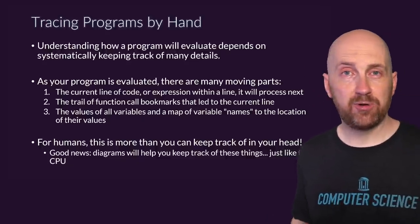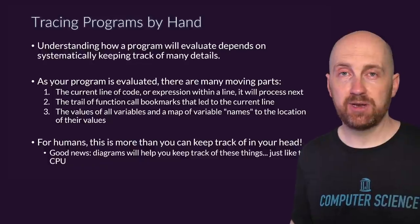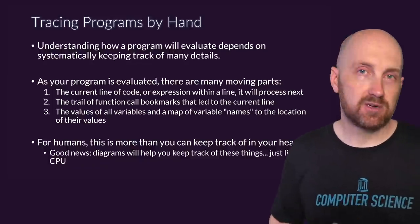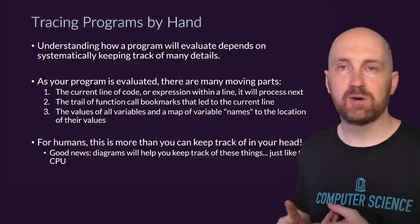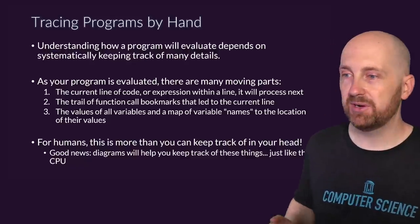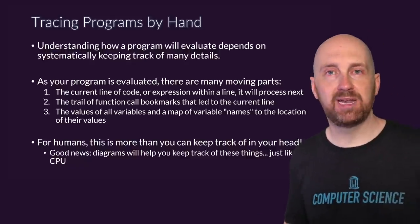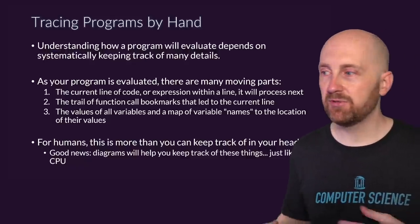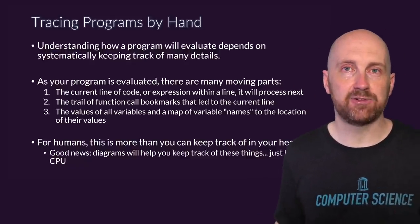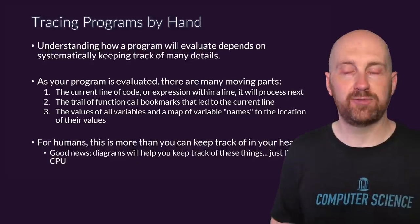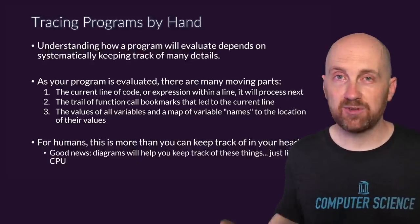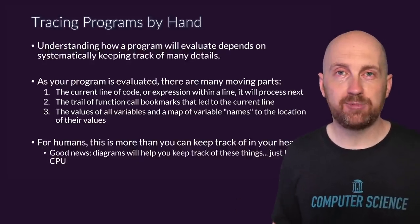As your programs are being evaluated, there are many moving parts. What is the current line of code? What is the trail of function calls that led you to the point you're currently at? What are the names of all the variables and what are their values? There are just lots of details when we have non-trivial programs — far more than humans can keep track of.